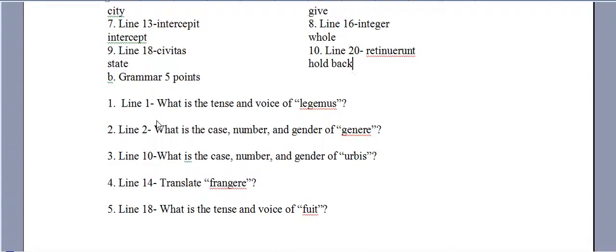The tense and voice of legemus, we've got to know that lego is third conjugation, and so the stem vowel e indicates that it's future, and the mus indicates that it's active. The case number and gender of generae is going to be ablative singular. It's third declension. And generis is neuter.